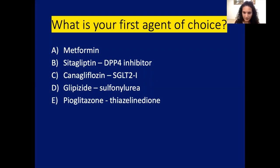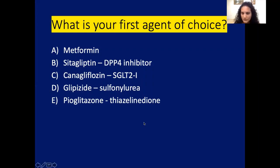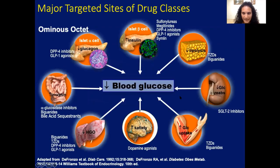Everybody said metformin — good choice. Some said glipizide. No one said sitagliptin or a DPP-4 inhibitor, thiazolidinedione, or SGLT2 inhibitor. So most of you seem to have a consensus. Let's talk about some of the data.